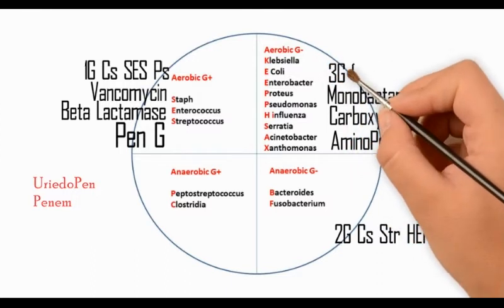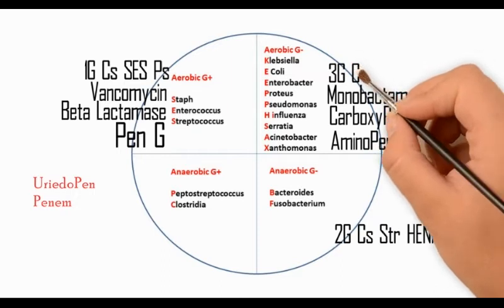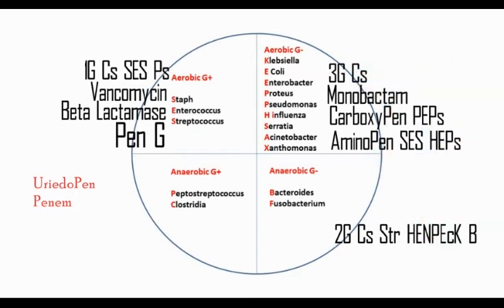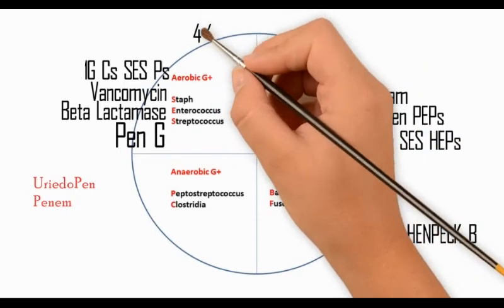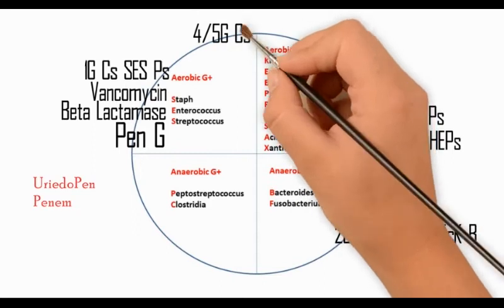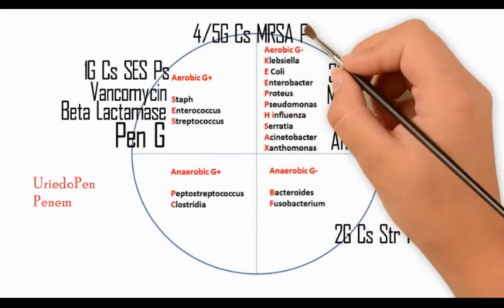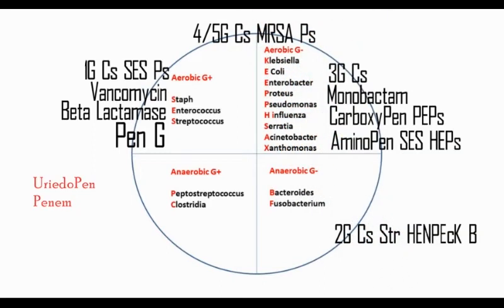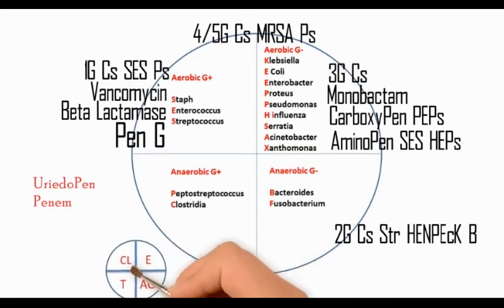The third generation cephalosporins are used for gram-negative infections in the ICU. The fourth and fifth generation cephalosporins act against Pseudomonas and MRSA.